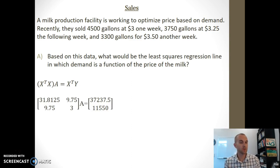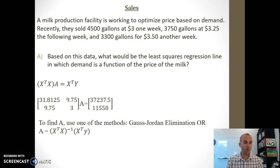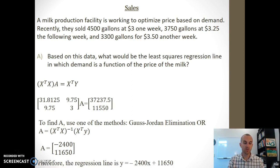Now I need to solve for A. How do I solve for A? I can either use Gauss-Jordan elimination, or I can multiply by the inverse of X^T X to get A by itself. Either way will work. You choose what method you prefer. Either way, I should end up with A equaling -2,400 and 11,650. This means if I plug it back into the equation, my regression line would be y = -2,400x + 11,650.